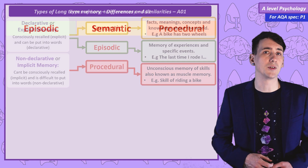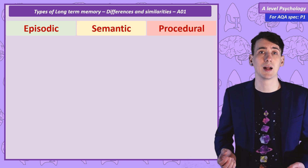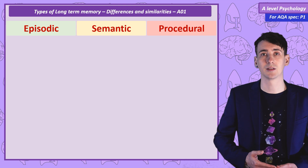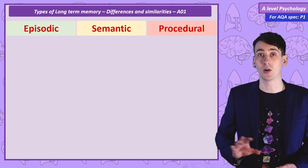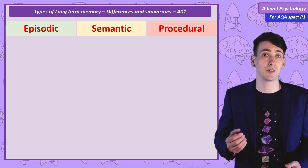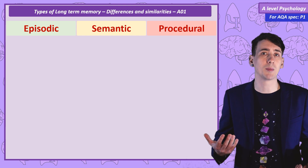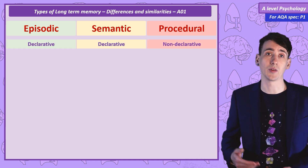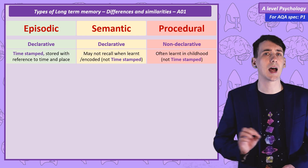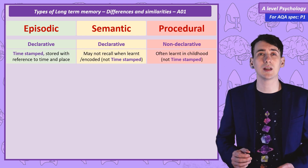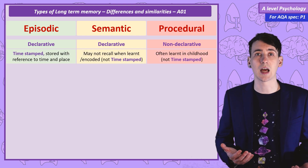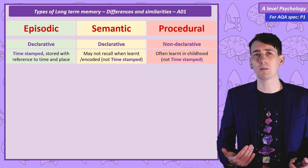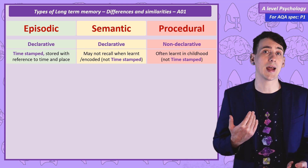There are lots of differences between these types of long-term memory that we should know, which will help us define them as separate processes. You don't need to remember absolutely all of these, but you can pick a few to use if you're asked to talk about the differences between them. Firstly, I've already talked about declarative versus non-declarative. Next: time-stamped. This means is the memory stored with a reference to time and place? With episodic — yes. If I think back I've got a sense of when that memory happened.